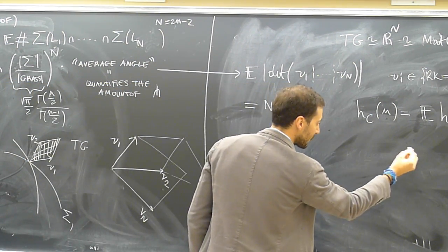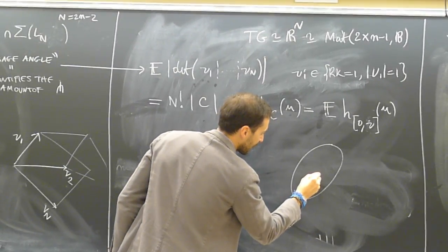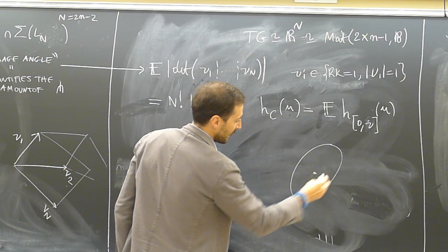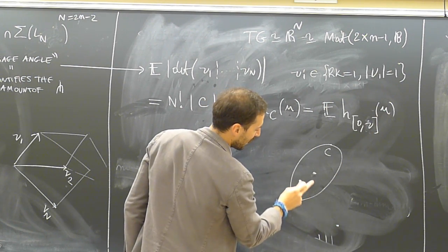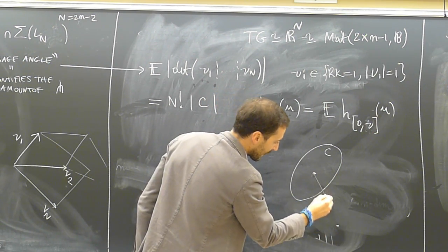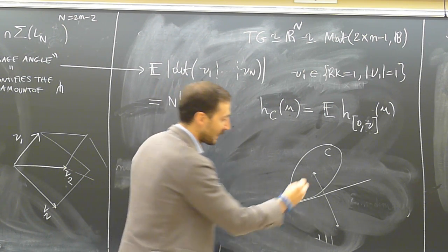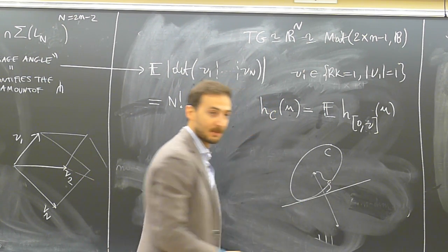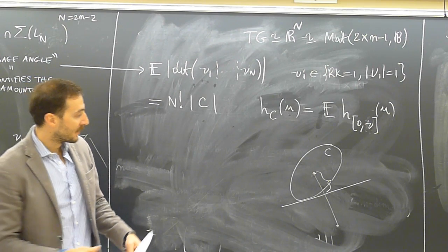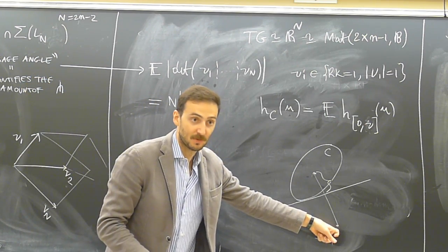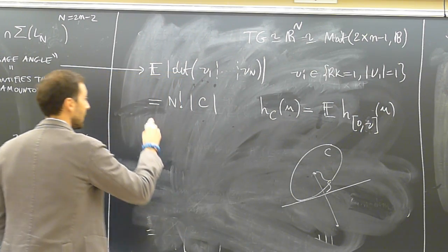The support function characterizes a convex body. Given a convex body and a point u, you take the direction determined by u, take the plane orthogonal to that direction tangent to the convex body, and the support function is that distance divided by the norm of u. So it gives the distance of the hyperplane tangent to the convex body in the direction of u, and it characterizes the convex body. This theorem is almost a forgotten theorem but very useful.